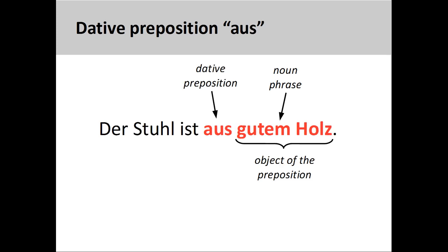The preposition 'Aus' is used to describe the material out of which an object is made or constructed. For example, 'Der Stuhl ist aus gutem Holz' — the chair is made of good wood. Here there is no definite article in the noun phrase, but the dative case is indicated by the strong adjective ending -EM.